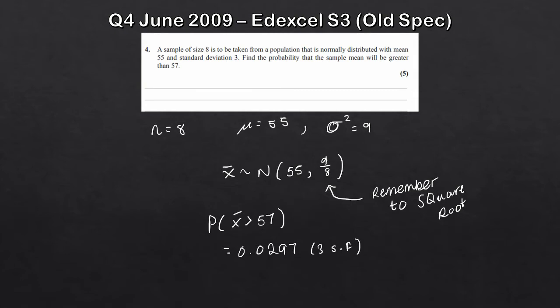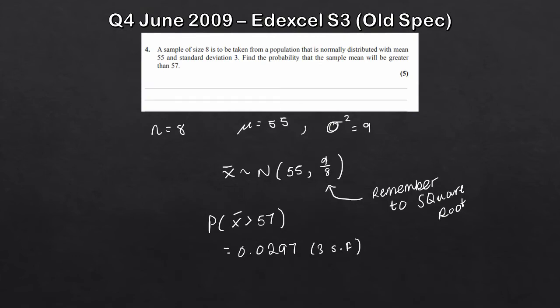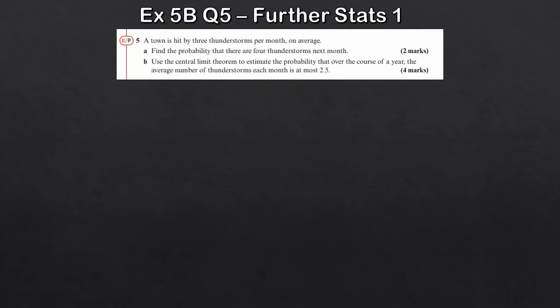Sometimes these questions are really easy, like that one, but more often than not it's going to be similar to the first question — using a discrete random variable or a different distribution. Let's move on to the next one, back to the Further Stats 1 textbook, Exercise 5B, question 5.